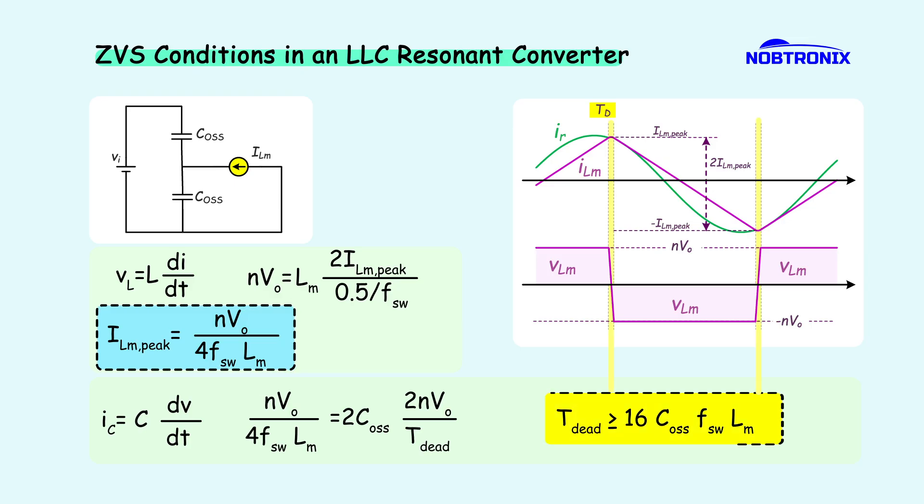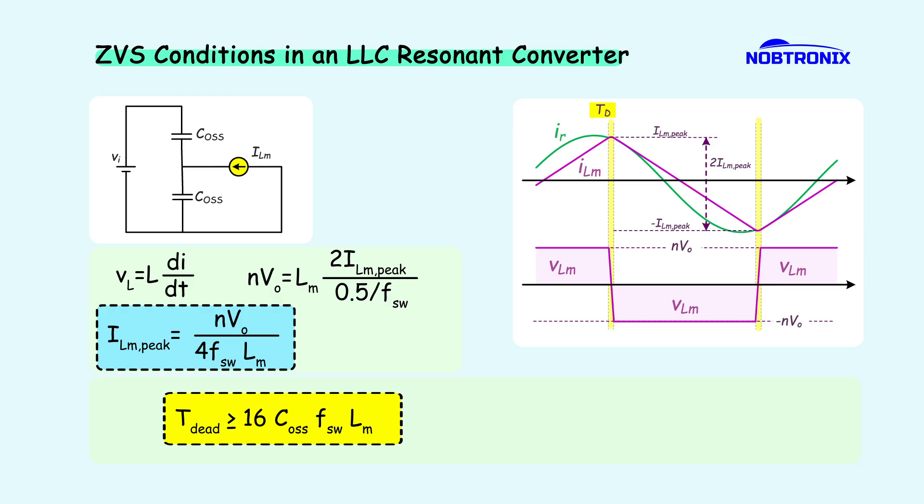For ZVS to happen, the dead time must be greater than a specific value, which is related to the maximum switching frequency and the magnetizing inductance. In this type of converter, the controller regulates the output voltage by changing the switching frequency. That means the frequency will vary. And the worst-case scenario for our timing condition is when the switching frequency is at its maximum. This is because the magnetizing current will be at its minimum.